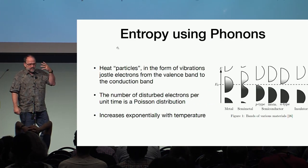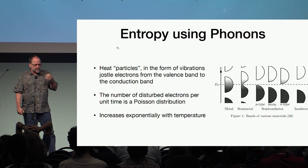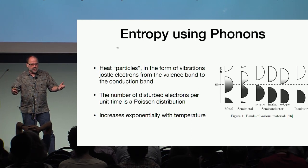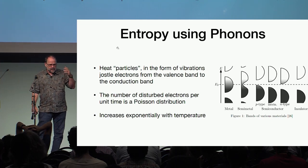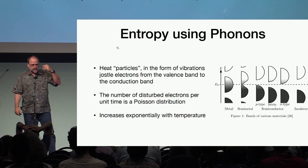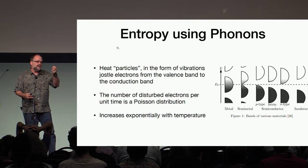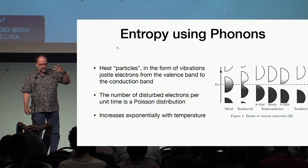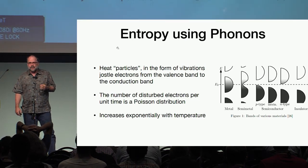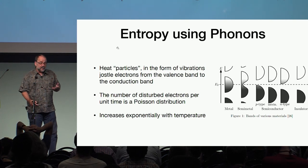The physics here is that heat forms phonons that vibrate the electrons from the valence band to the conduction band, creating a Poisson distribution of electrons in each one of the pixel values. This amount of electrons in the pixel values increases exponentially with temperature.